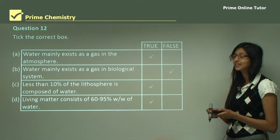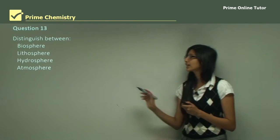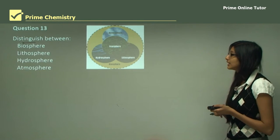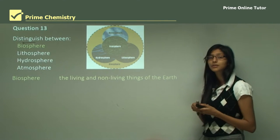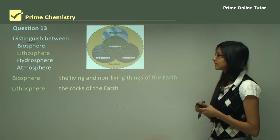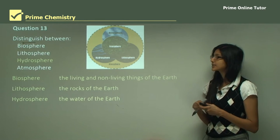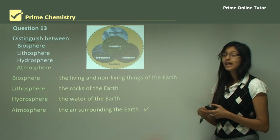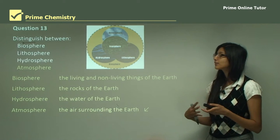Question 13 asks you to distinguish between the biosphere, lithosphere, hydrosphere, and atmosphere. The verb is 'distinguish,' meaning you need to find the differences between these four layers. The biosphere includes everything — all living and non-living parts of the earth. The lithosphere consists mostly of rocks. The hydrosphere is the part of the earth consisting mostly of water. The atmosphere is the air surrounding the earth, involving all the gases — the oxygen we breathe in and the carbon dioxide we breathe out.